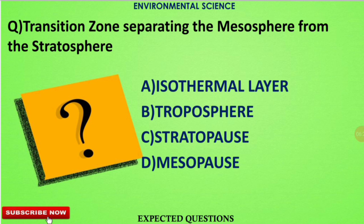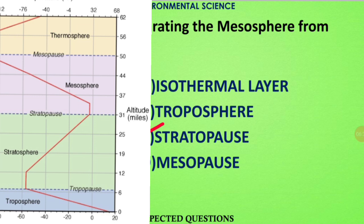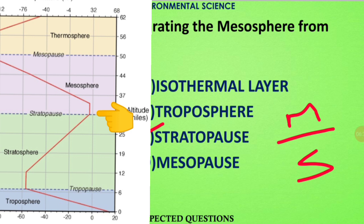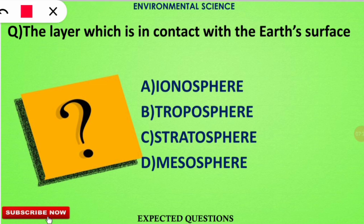The next question: the transition zone separating the mesosphere from the stratosphere is called what? The correct option is option C — the stratopause. The stratopause region divides the mesosphere from the stratosphere.